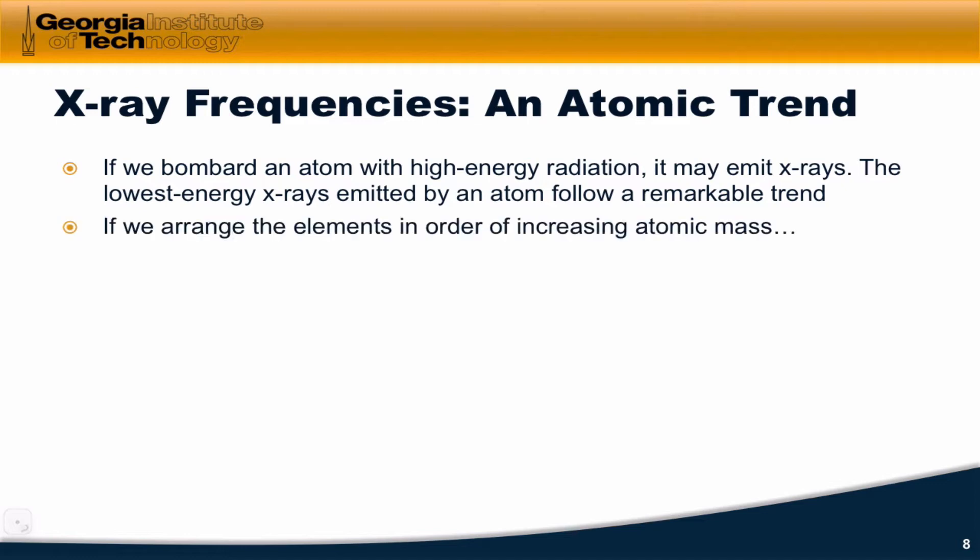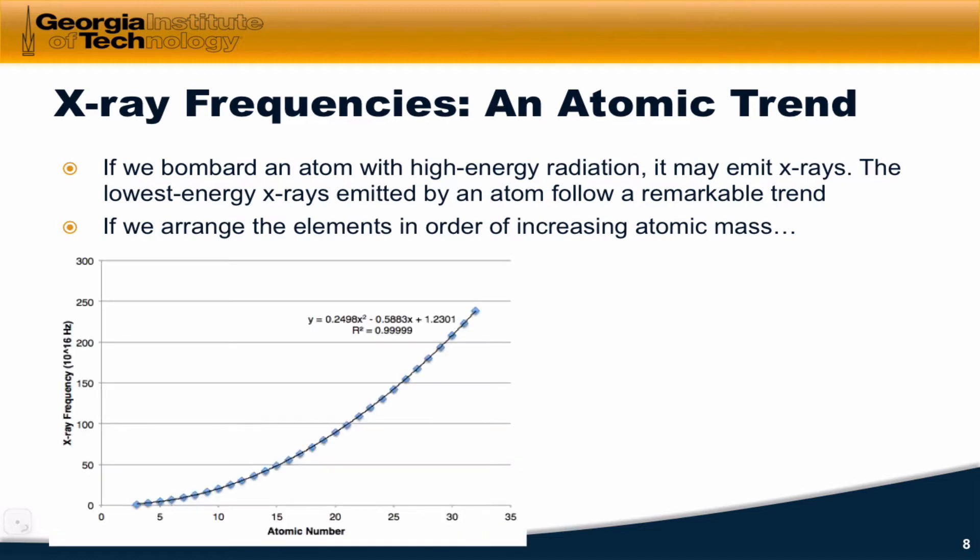If we arrange the elements in order of increasing atomic mass and pin an index to each atom, with a couple of exceptions which I've actually taken out of this plot, we get a very nice quadratic relationship between what's called the atomic number of the element and its lowest energy X-ray frequency.